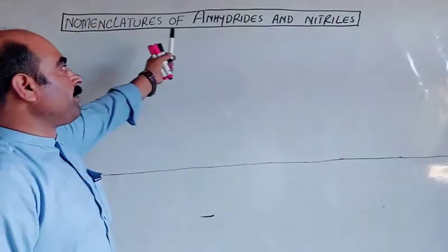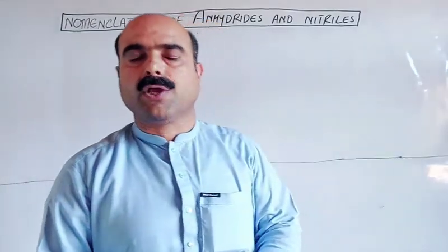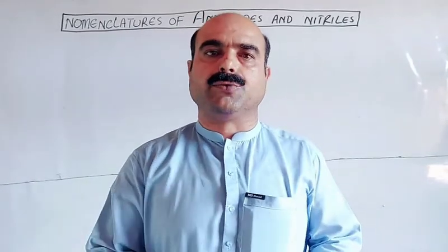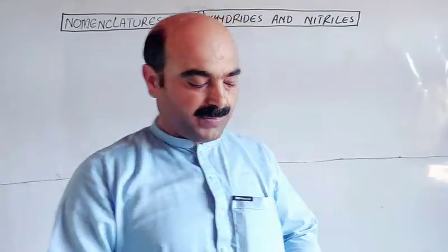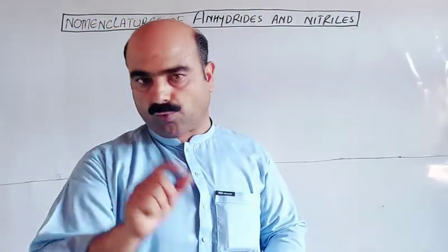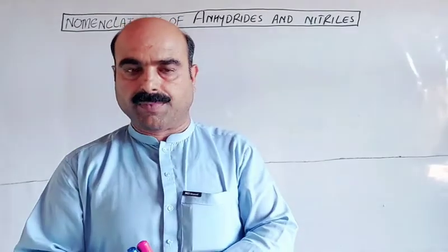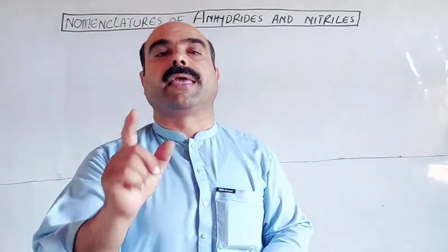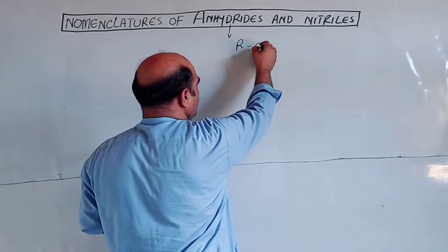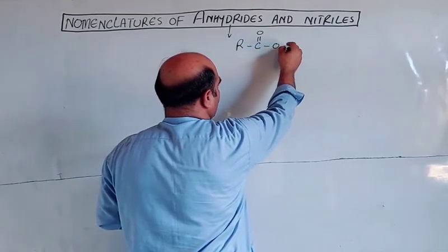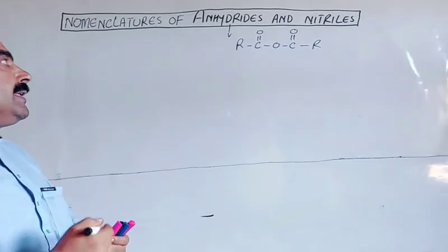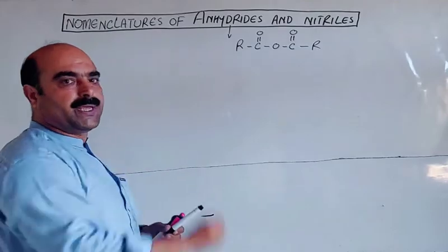The topic is nomenclature of anhydrides and nitriles, which are derivatives of carboxylic acids. Among both common names and IUPAC names, anhydride means without water. The general formula for anhydrides is R-CO-O-CO-R. These are the derivatives of carboxylic acids.